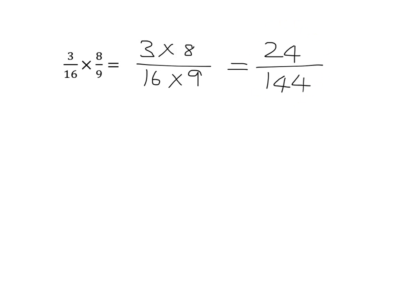Of course we like to write our fraction in simplest form, so we've got to see if we can divide anything into the top and the bottom. I can see quite easily that 12 will go into 144 and also into 24. 12 goes into 144 twelve times and into 24 two times, giving 2 over 12. But that's still not simplest form, so dividing by 2 gives us 1 over 6 as our final answer.